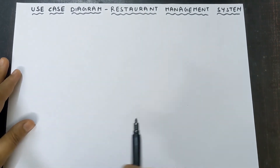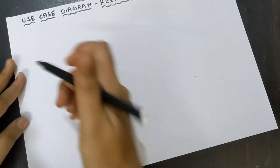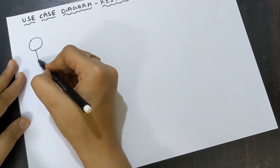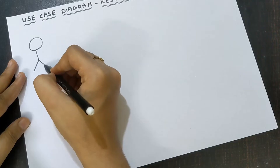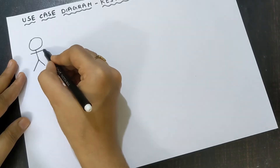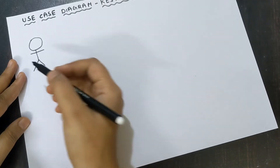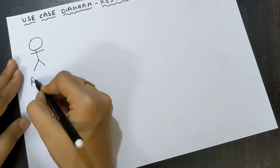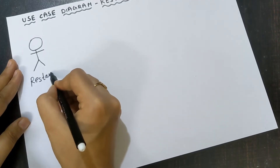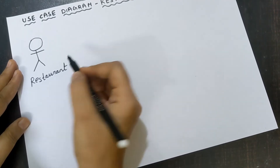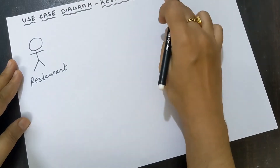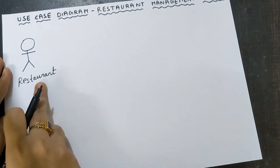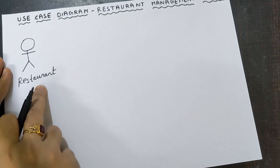You need to draw the actor like this. The first actor can be restaurant. Because in restaurant management system, restaurant is very important — restaurant plays the vital role.